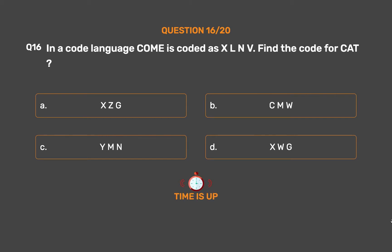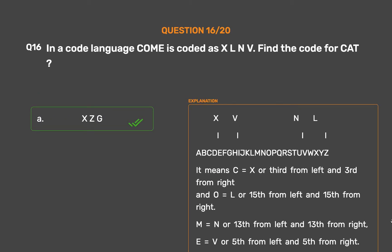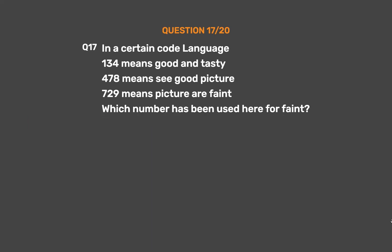The correct answer is Option A: XZG. The rule is each letter is replaced by its mirror/opposite: C=X (3rd from left = 3rd from right), O=L (15th from left = 15th from right), M=N (13th from each). So CAT: C=X, A=Z, T=G.